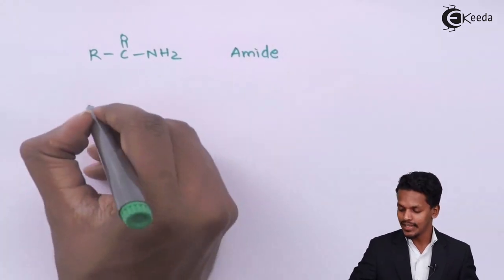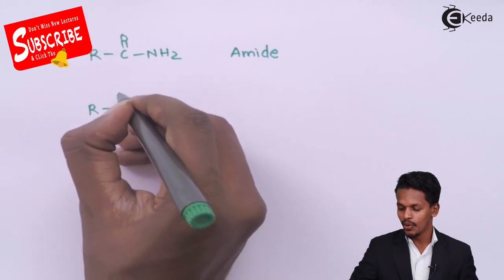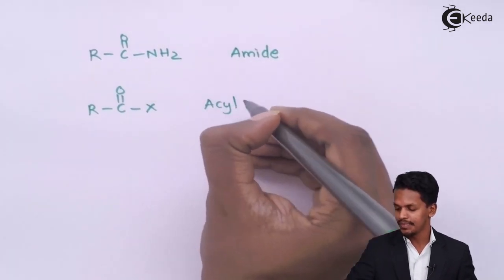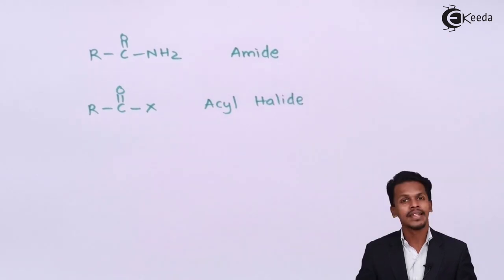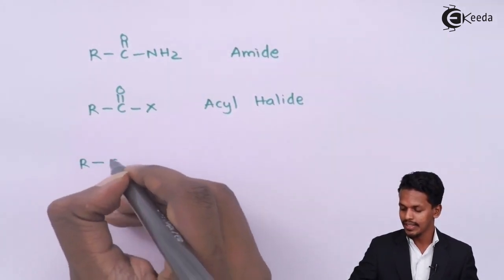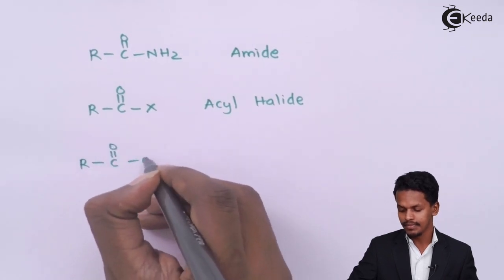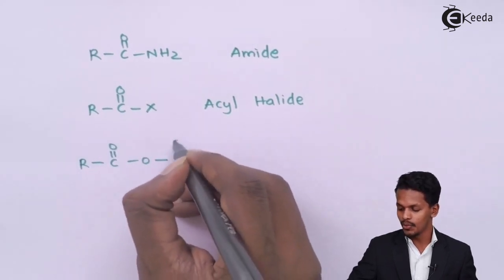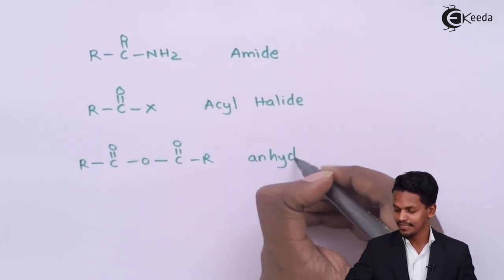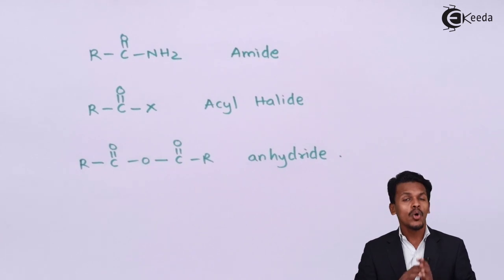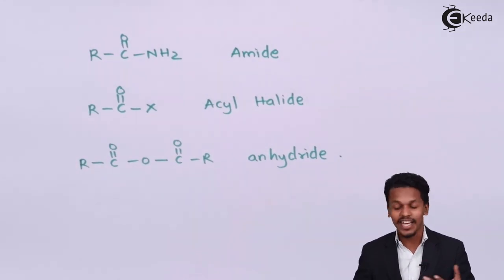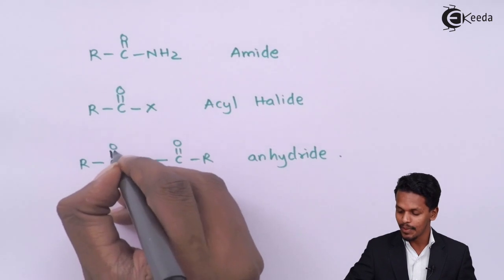The next one is RC double bond O, X — this is known as acyl halide. And the last one: RC double bond O, O, C double bond O, R — this is known as anhydride. All these compounds have one thing in common, and that is the carbonyl group, that is C double bond O.